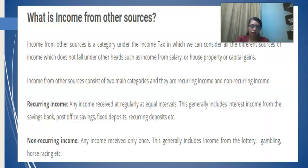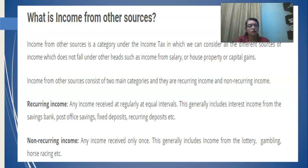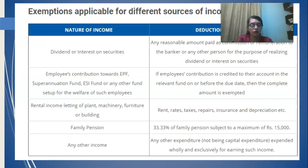Mainly, income from other source consists of two categories: recurring income and non-recurring income. Recurring income, for that matter, can be fixed deposits, or monthly interest from a savings bank account or post office account. Non-recurring income can be in the form of gambling, horse race, lottery, game show, etc. — these incomes come once in a while.